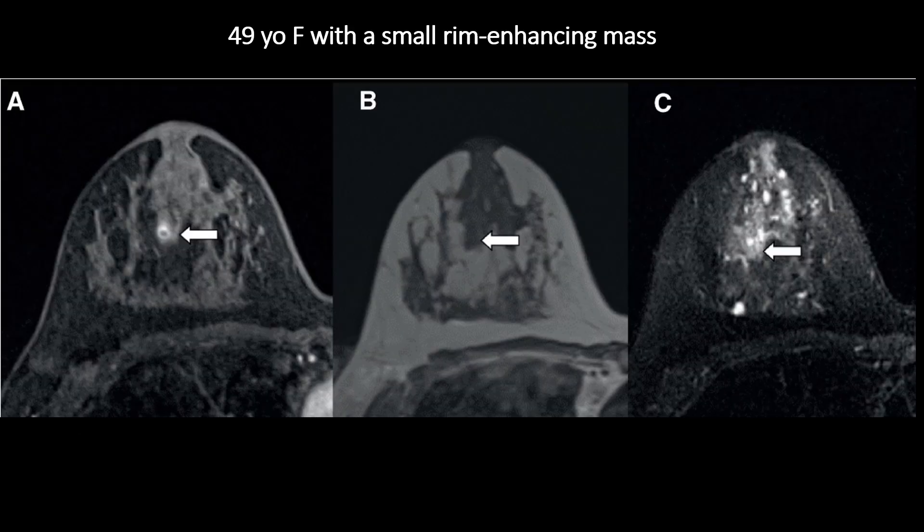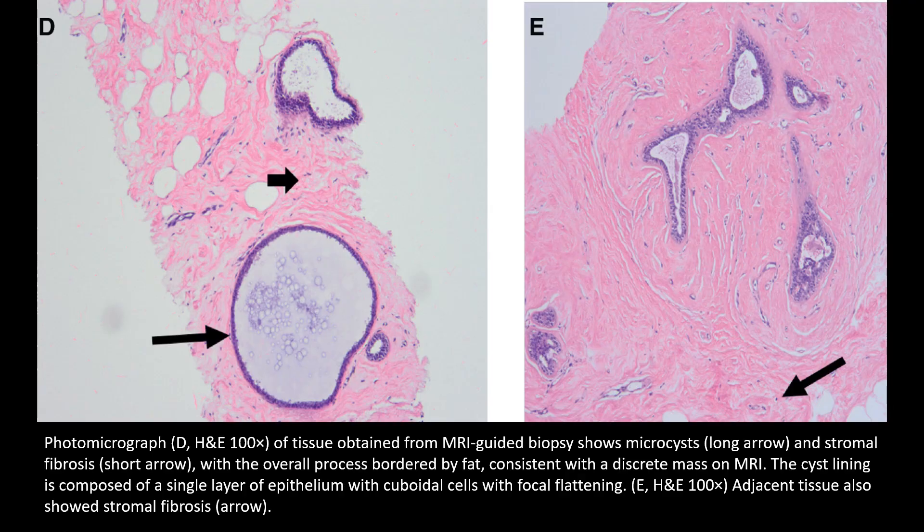Here's a case of a 49-year-old female with a small rim-enhancing mass within the central right breast. This area did not show a corresponding high T2-signal lesion and biopsy was obtained. The photomicrograph shows microcysts and stromal fibrosis, with the overall process bordered by fat, consistent with a discrete mass on MRI. The cyst lining is composed of a single layer of epithelium with cuboidal cells with focal flattening. The adjacent tissue also showed stromal fibrosis.